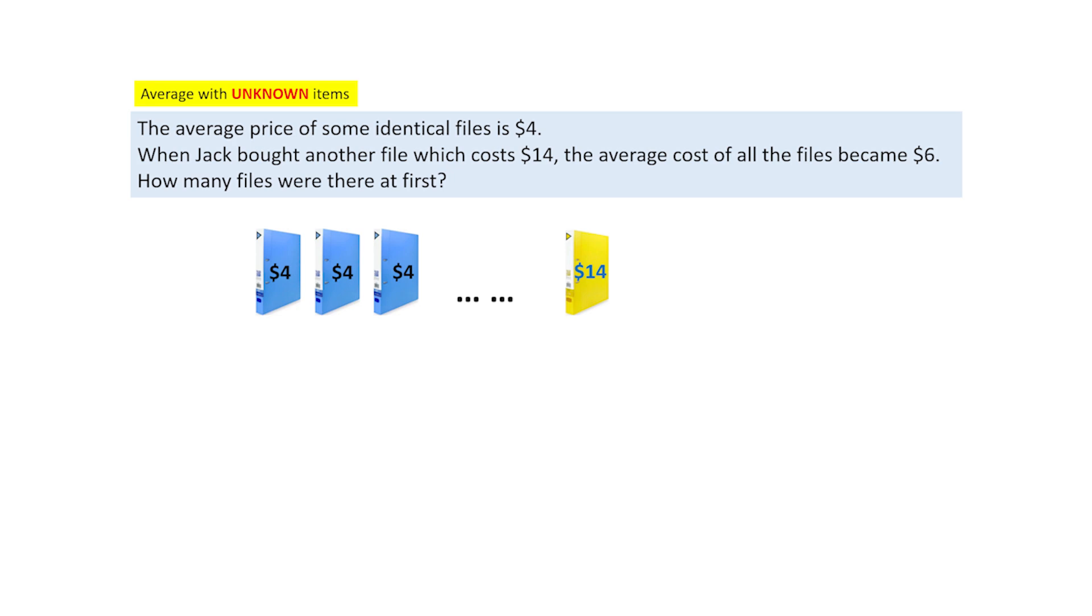so you add another file right at the end and write $14 into the box. The average cost of all the files becomes $6.